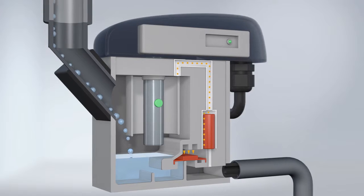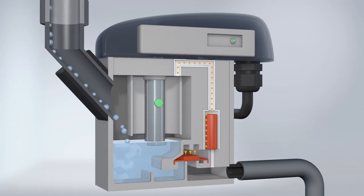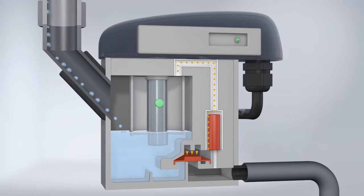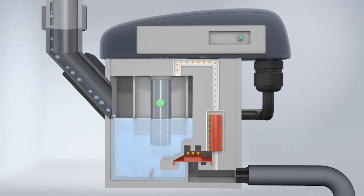Once again, as the condensate flows in, the membrane remains closed due to system pressure. Its larger upper surface provides the necessary closing force on the valve seat and seals it tightly.